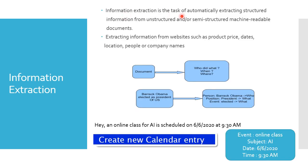Information extraction is the task of automatically extracting structured information from a document. For example, from the sentence 'Barack Obama elected as US President', we need to extract the person — Barack Obama; the position — President of the US; and the event — election.